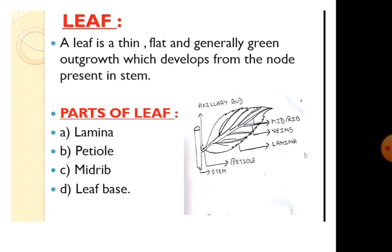You will also find veins in the leaf, and veins perform two functions: one is to transport water and food, and another is to provide support to the leaf. Leaf base: the petiole is attached to the stem at a slightly swollen point, and that slightly swollen point is called the leaf base.